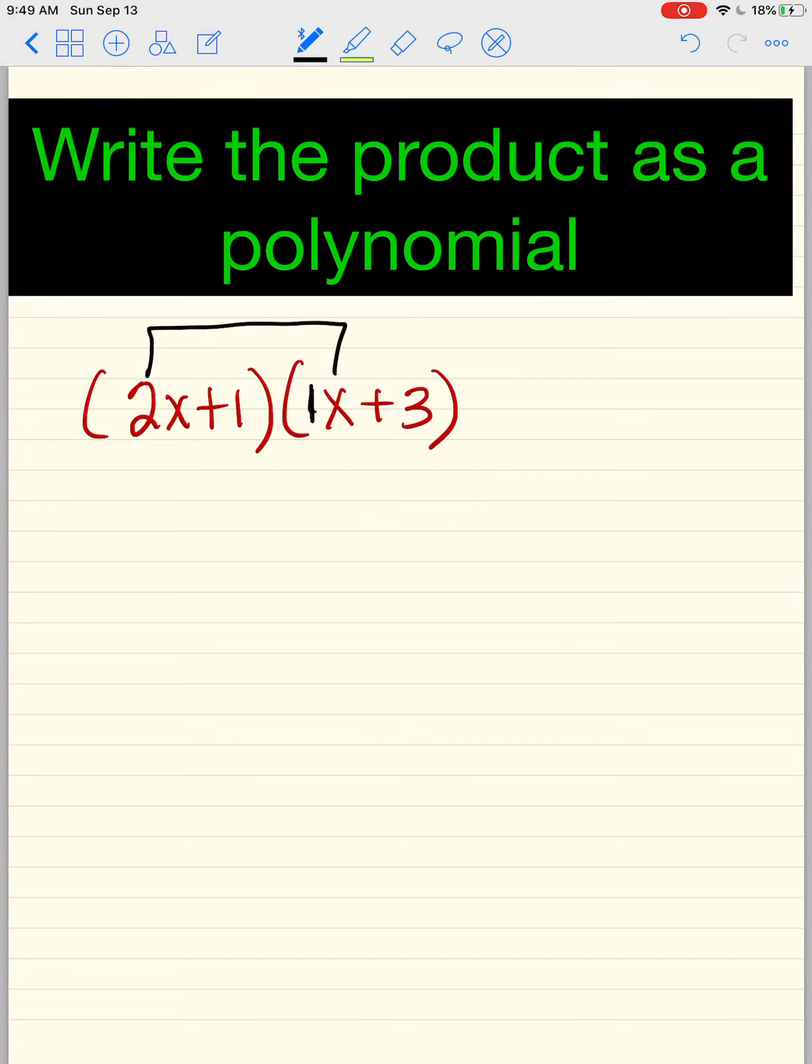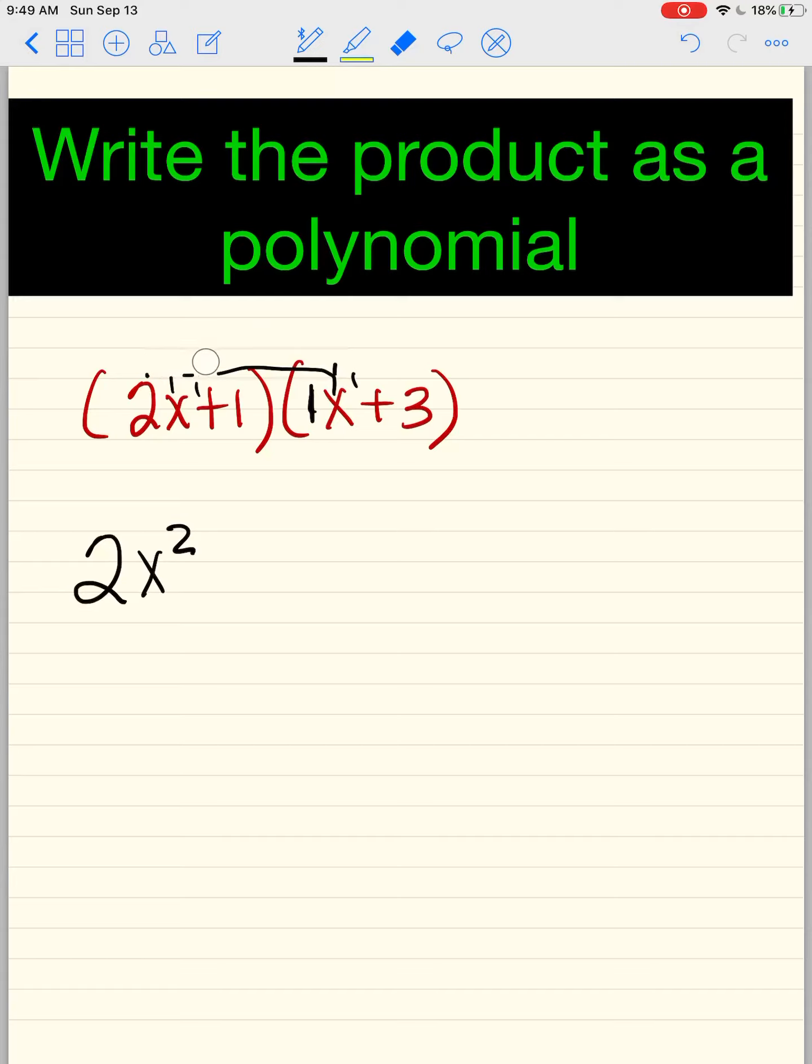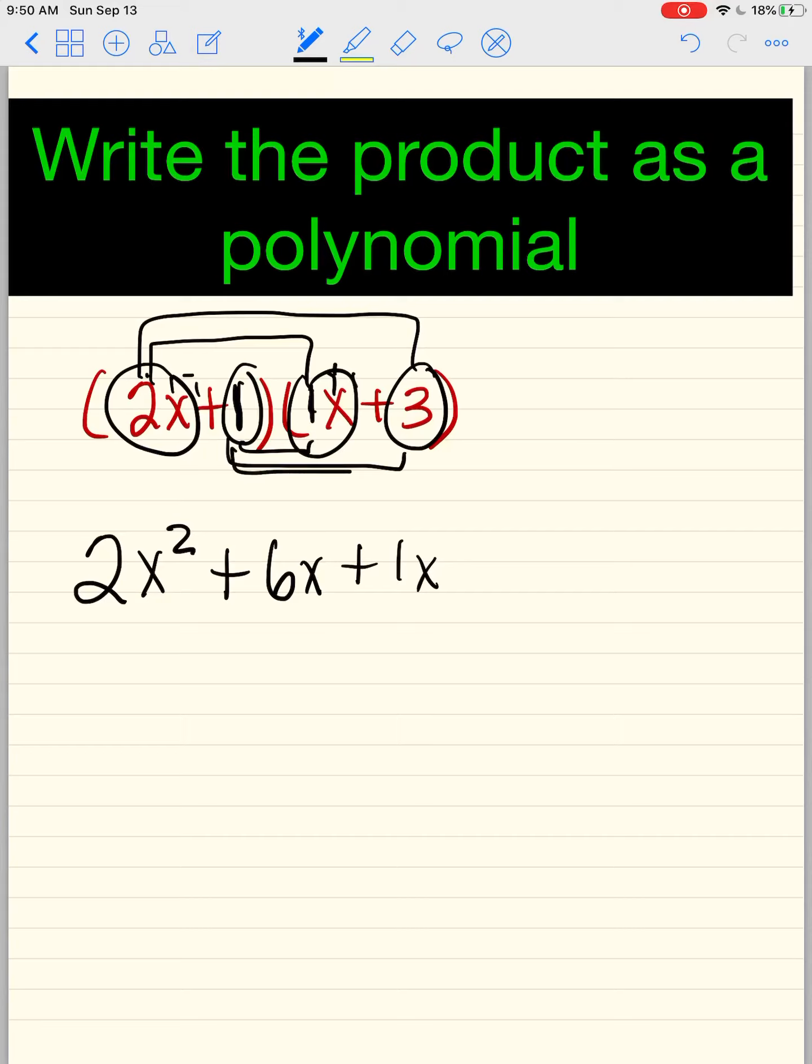2 times 1 is 2. And then the x with the x makes x². Do you remember why? Because there's a 1 here and a 1 here. Okay. So let me get rid of that for a second here. Okay, so the first term was this times this. Now I need 2 times 3 is 6. And then so 2x times 3 is 6x. 1 times 1 is 1x. And then so 1 times 1x is 1x, right? 1 times anything is the other thing. 1 times 3 is 3.